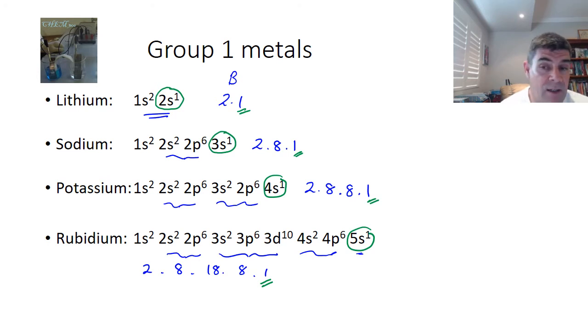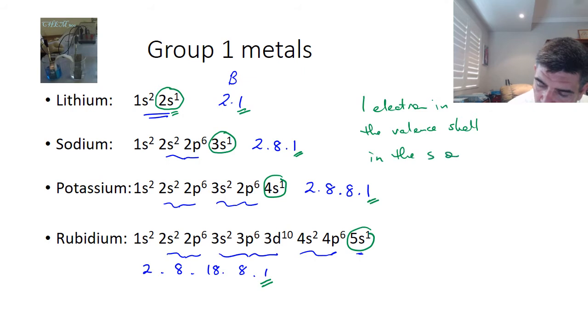Now what's more important is that when we look at the Schrodinger model and include the subshells, you can see that this particular electron is sitting in the S orbital. So 2s, 3s, 4s, 5s, and just one electron. So one electron in the valence shell.